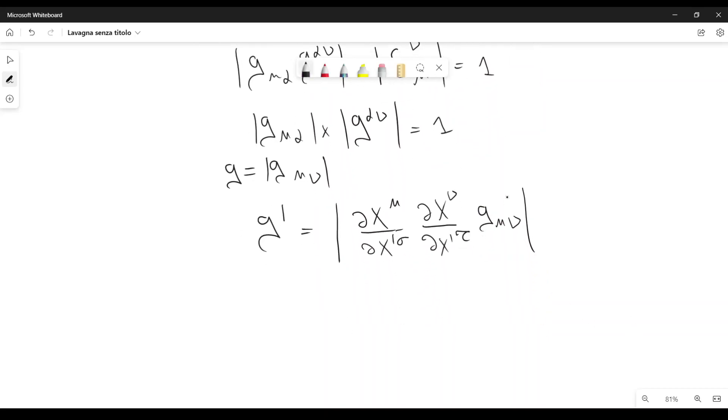From here, we get that this is equal to the determinant of D X mu over D X prime sigma times the determinant of D X nu over D X prime tau times the determinant of G mu nu. But this is G.